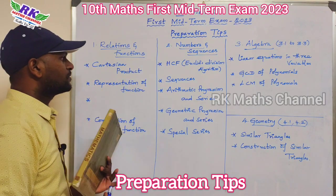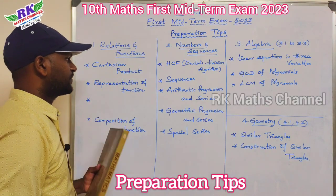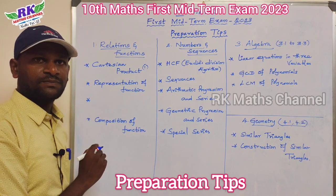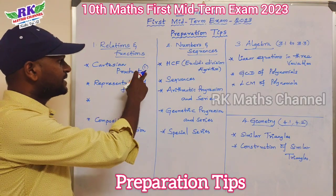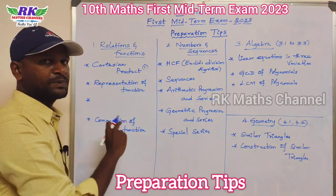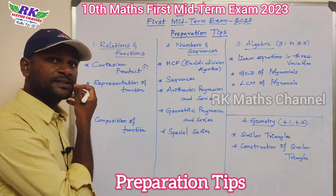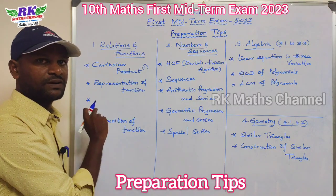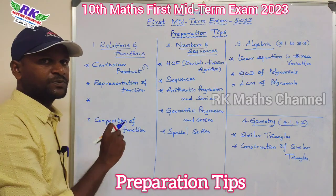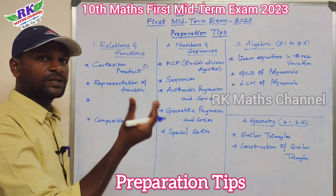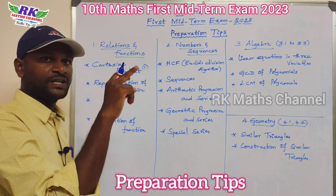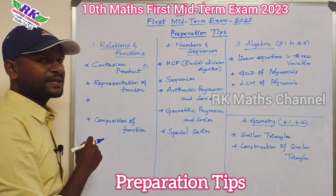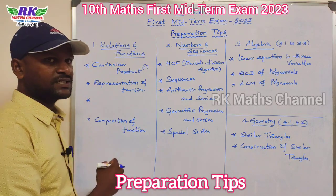This is a one-mark question. Last year in the public exam, this topic was covered. There will be one compulsory question. It is important. For Cartesian product, you do union and intersection — it's simple. That is why you should practice. Next comes Functions.